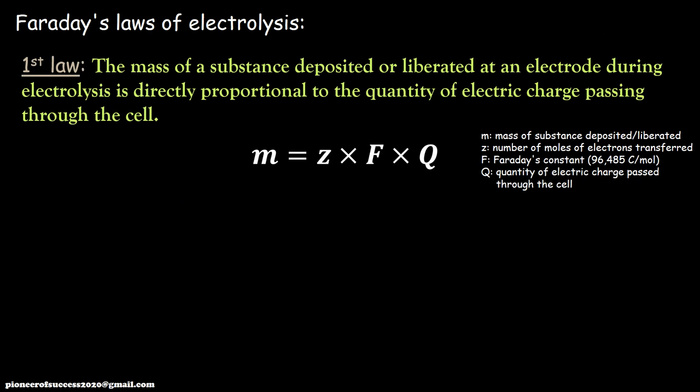We can see from the equation that M is directly proportional to Q — if there is more current or charge passing through the cell, then there is more deposition or material liberation.